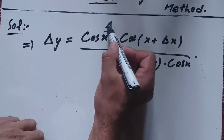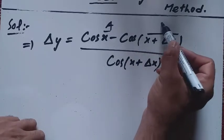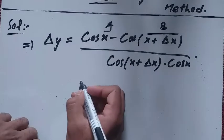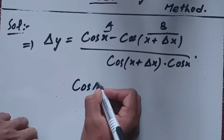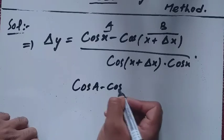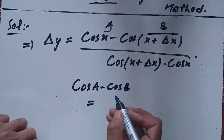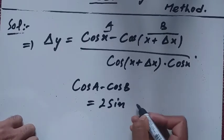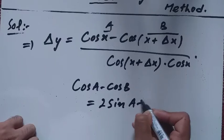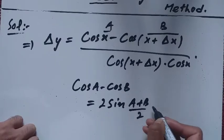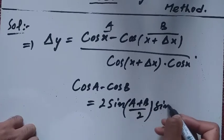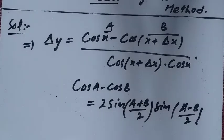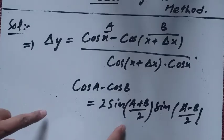Now, take x plus delta x as a and x as b. This gives us the trigonometric identity: cos a minus cos b is equal to twice sin of (a plus b) divided by 2, multiplied by sin of (a minus b) divided by 2. Remember this identity — we will use it here.